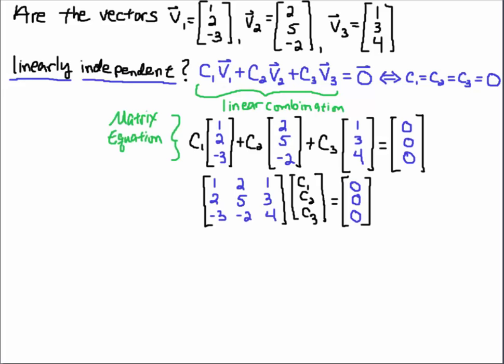And my claim is that the only way that this is going to be true is if C1, C2, C3, the vector that has those components, is equal to the zero vector. So I'm going to write this as a matrix equation. Now remember that this linear combination, this is really matrix vector multiplication.